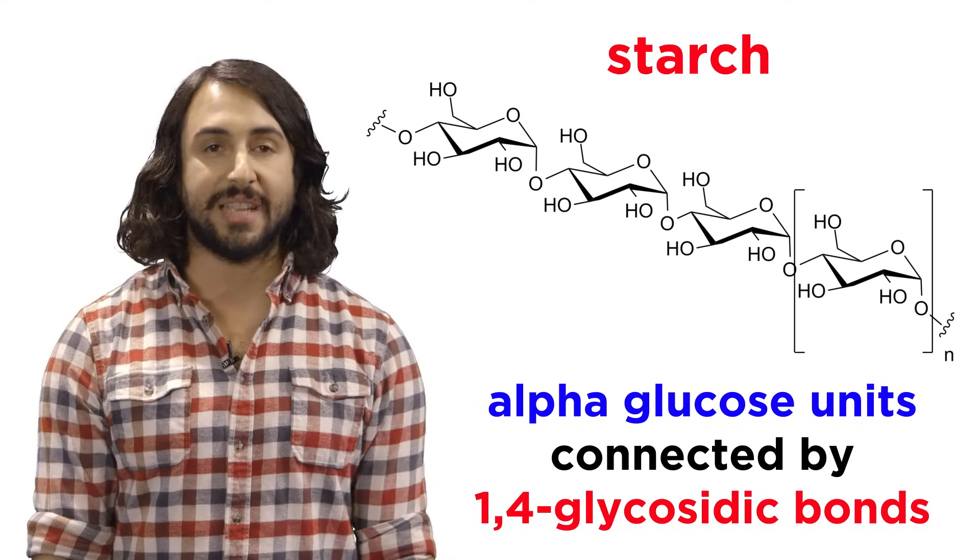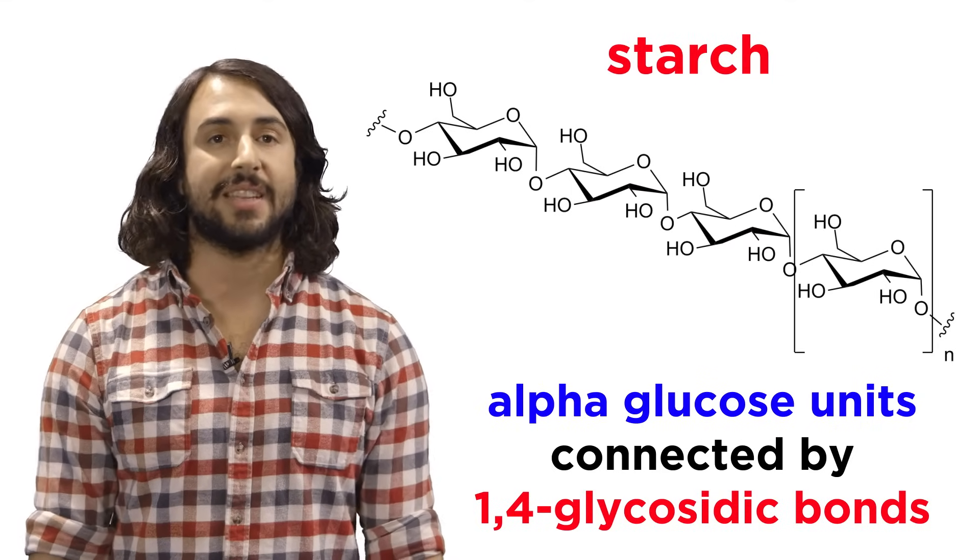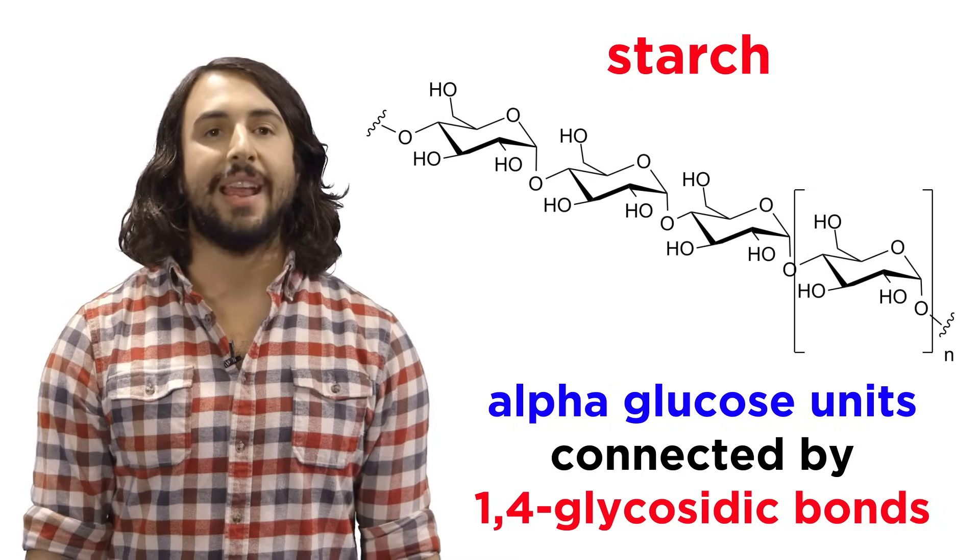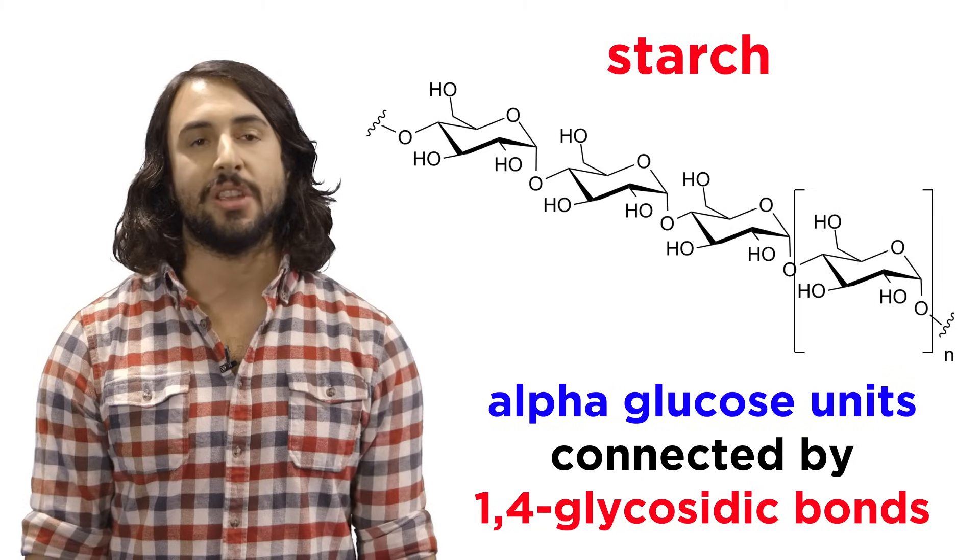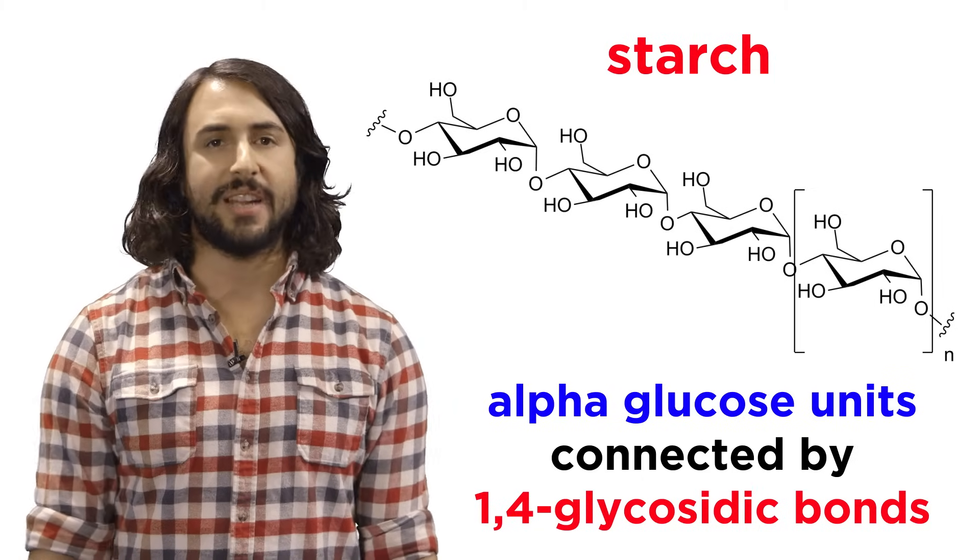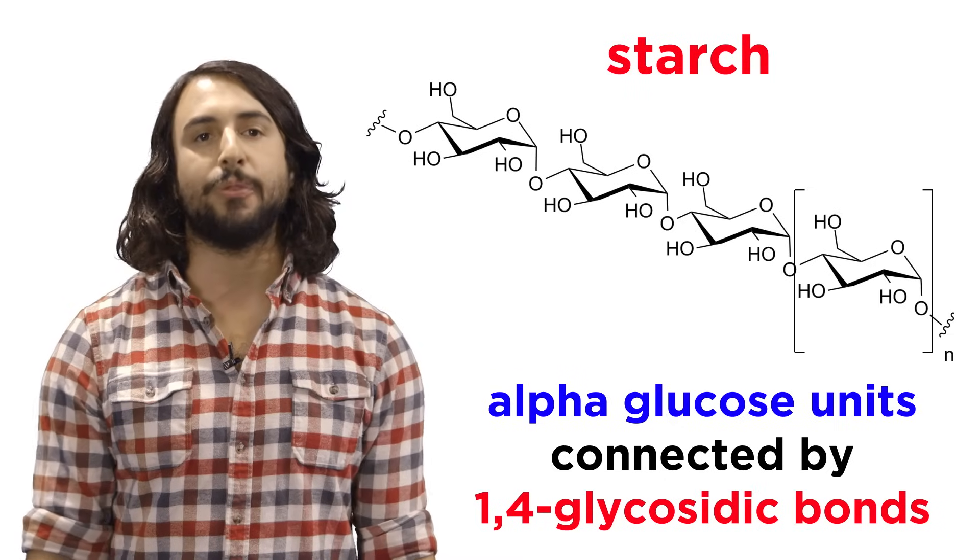Starch, which is abundant in potatoes and rice, is another polysaccharide made from glucose, and it only differs from cellulose in that all the glycosidic linkages are alpha instead of beta. This one difference in stereochemistry gives the molecule different properties.